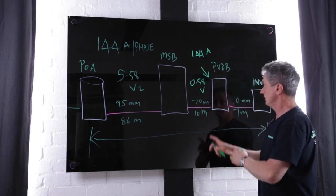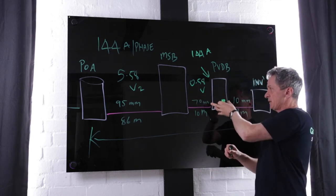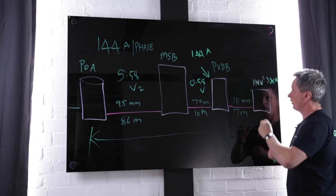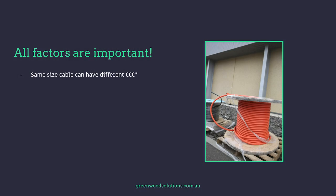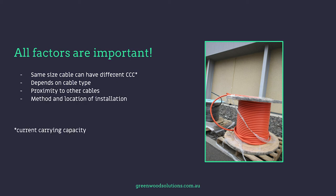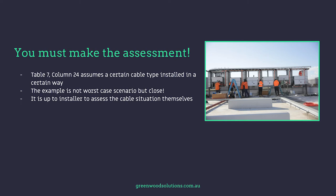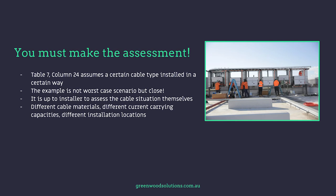Methodically: current carrying capacity of the cable — tick; volt rise — tick; current carrying capacity of cable between the MSB and the PVDB — tick; volt rise — tick; and then the last section where the inverter or inverters connects. The same size cable can have a different current carrying capacity depending on the cable type, proximity to other cables, method and location of installation.